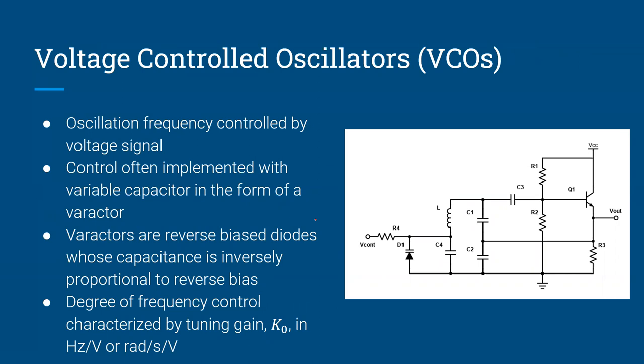On the receiver, when doing down-conversion, we have a local oscillator driving a mixer. To synchronize that local oscillator to the transmitter carrier, we need to vary the frequency of the local oscillator until it matches. The fixed-frequency oscillators we've looked at so far offer no way of varying the oscillation frequency. To make a phase-locked loop, we need some way of varying the oscillator frequency. The device that does that is called a voltage-controlled oscillator, or VCO.